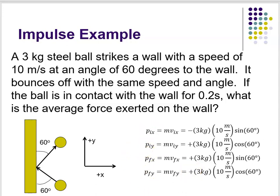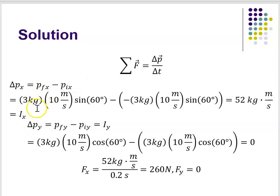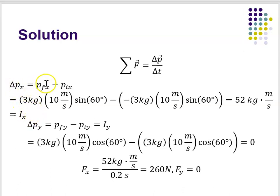Those are all my knowns. My impulse is equal to my change in momentum. Impulse is a vector because it equals F average times delta t, and F is a vector. Also, p is a vector and impulse equals delta p. So impulse equals delta p, which equals F average times delta t. Since they're vectors, I'm going to analyze them component-wise. I'm going to set the impulse equal to my change in momentum in the x direction.